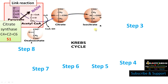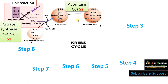In step 2, citric acid is converted to isocitric acid and the enzyme involved is aconitase. This is actually a two-step reaction. First, citric acid is converted to cis-aconitic acid, which is an unstable compound, by dehydration or removal of water. Then cis-aconitic acid is converted to isocitrate or isocitric acid by hydration. The enzyme involved is aconitase in both reactions.